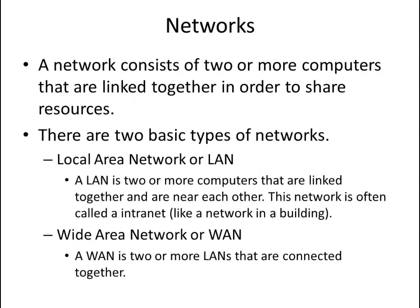We have networks. A network consists of two or more computers that are linked together in order to share resources. There are two basic types of networks. There's a local area network, or LAN. A local area network is two or more computers that are linked together at or near each other. This network is often called an intranet. A business might own a building and connect the whole building with a local area network so their employees can exchange information.